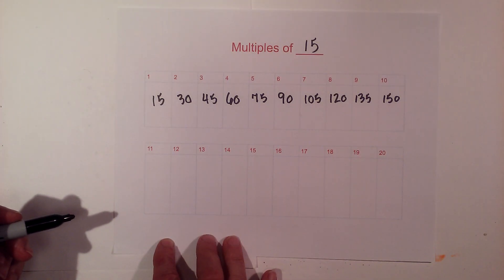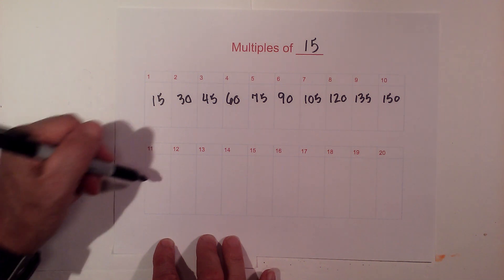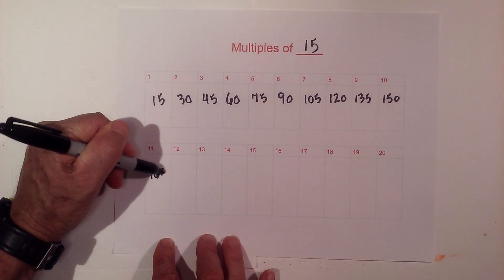So we've done 10. Now we go to 11. 15 times 11 is 165.